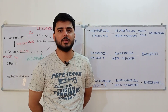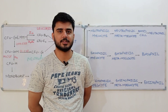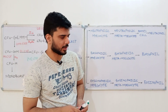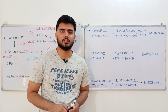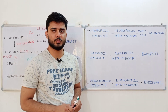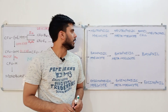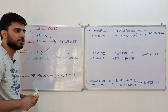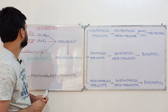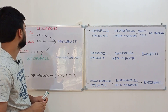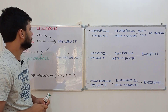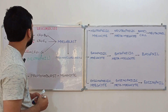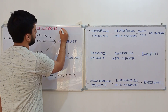Hello and welcome everyone. In our lecture series on hematology, so far we have discussed the formation of red blood cells, that is erythropoiesis. Now in today's lecture, we will discuss the formation of leukocytes; the process is known as leukopoiesis. You should know that leukocytes are of two types: granulocytes and agranulocytes.